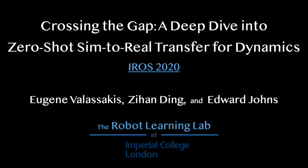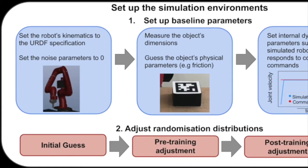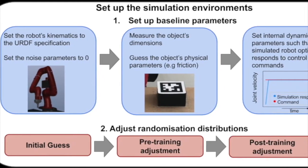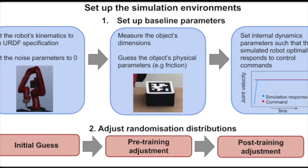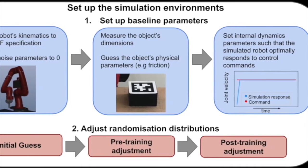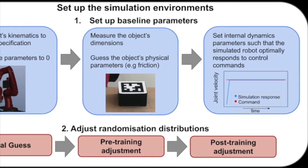Our work takes a deep dive into ZeroShot Sim-to-Real Transfer for Dynamics, a field that aims to deploy control policies trained in simulation into the real world, without further training on task-specific real-world data. We start our investigation by analyzing and highlighting the engineering processes and task-specific tuning efforts typically required in order to set up training environments for ZeroShot Sim-to-Real Transfer.